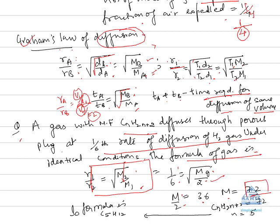Now 72 is the molar mass of CnH2n plus 2. Now CnH2n plus 2 is equal to 72. So we can easily find out the value of n which is equal to 5. So the formula is C5H12. This is our formula.